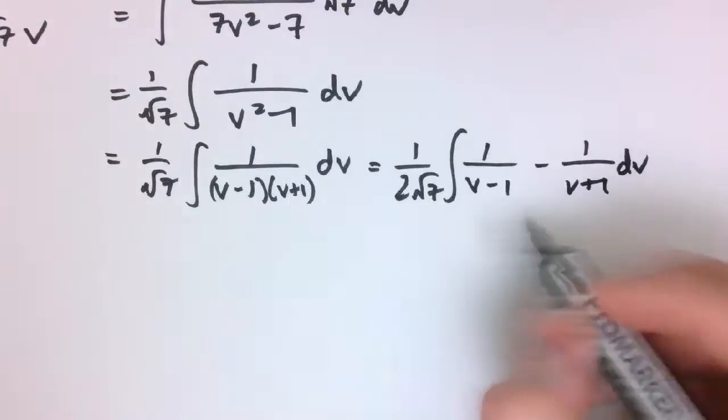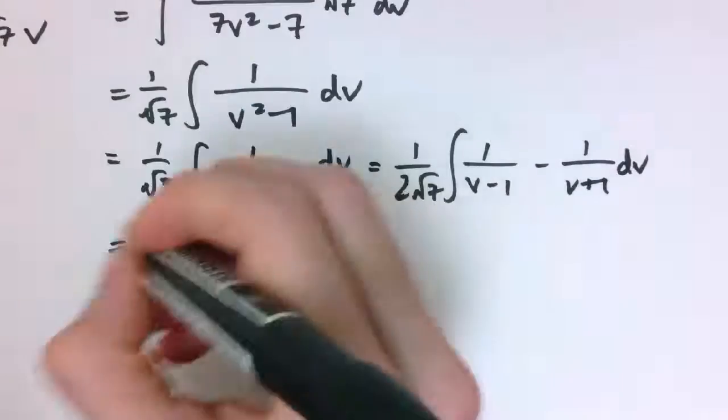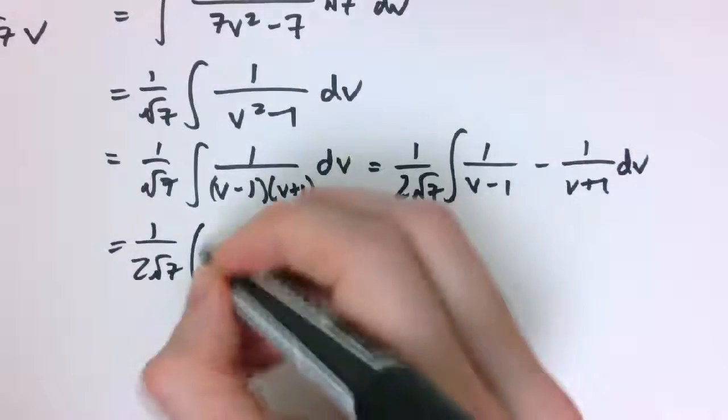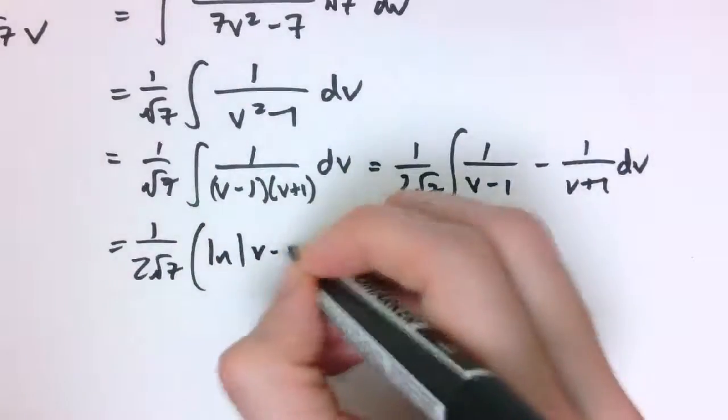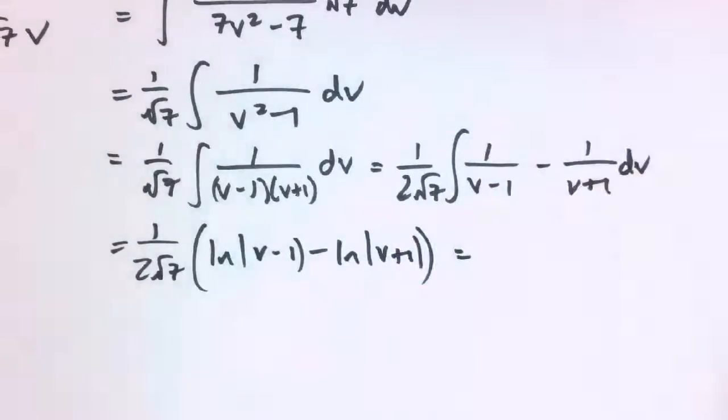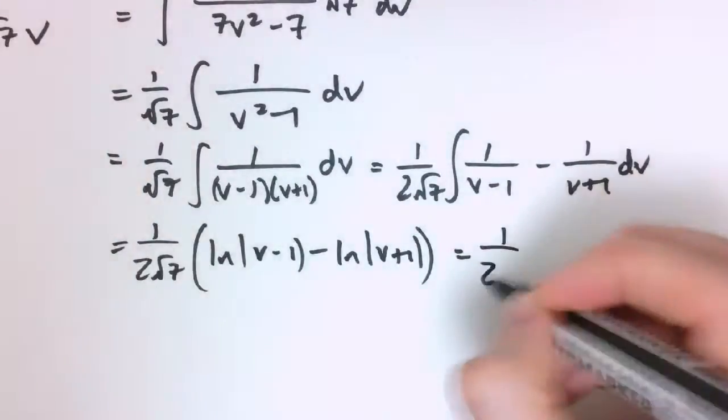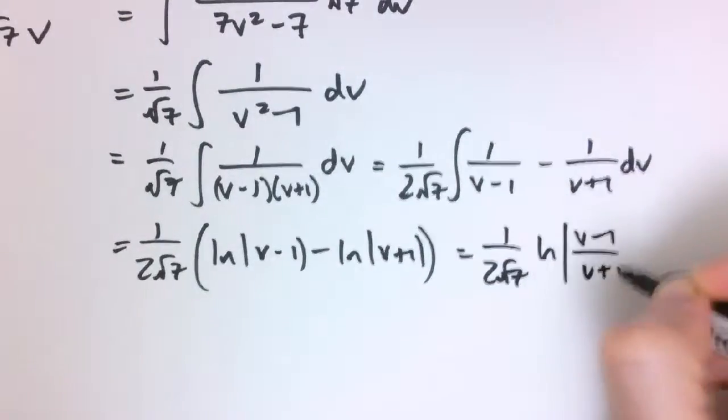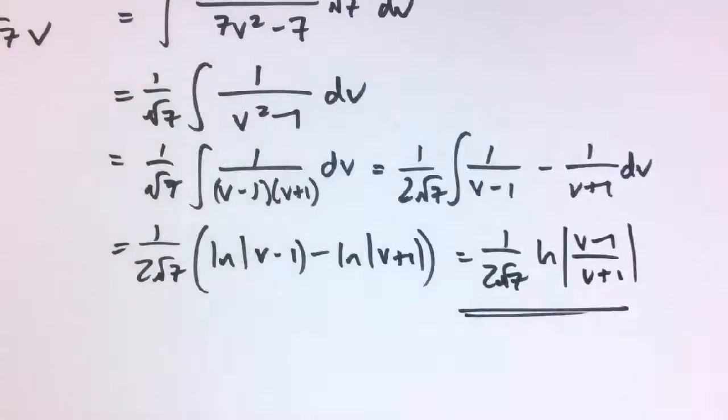So doing these integrations, then we get 1 over 2 root 7 times log of v minus 1 minus log of v plus 1, and that's 1 over 2 root 7 log of v minus 1 over v plus 1.